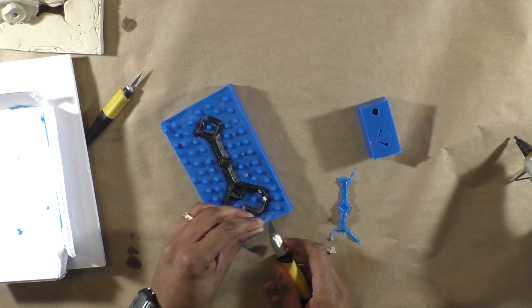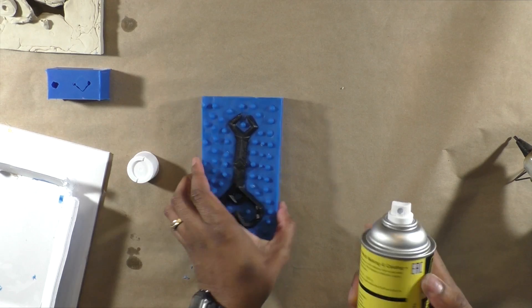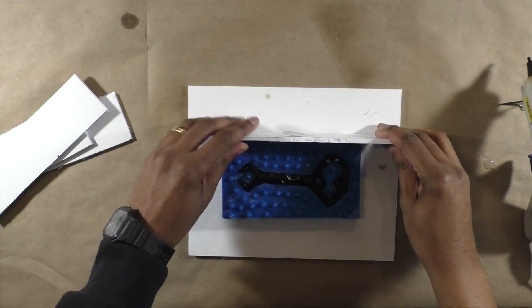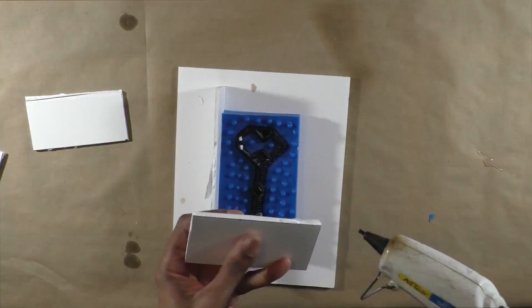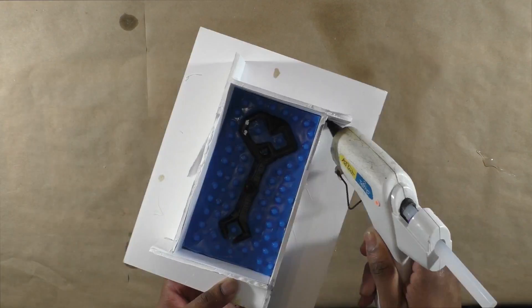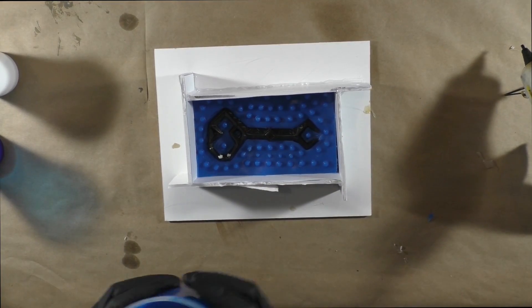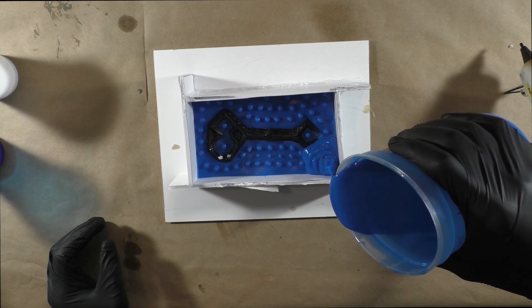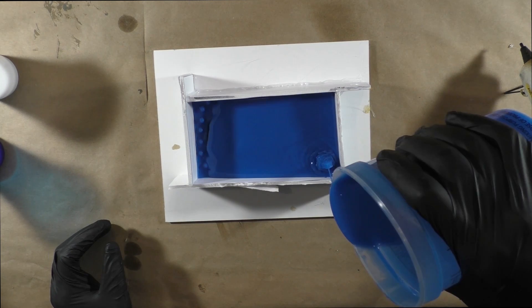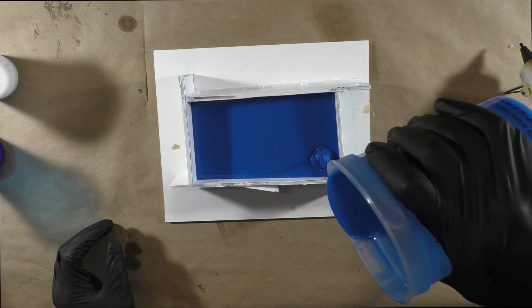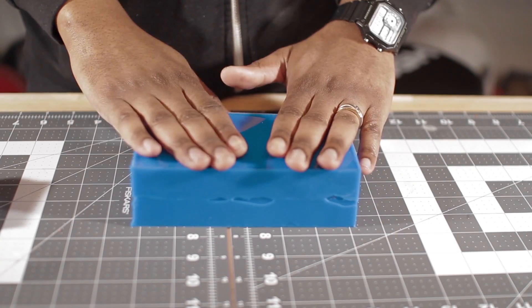After removing the clay and giving the mold a quick trim of the excess silicone, I sprayed a bit of mold release and repeated the process of building the box and pouring the silicone for the second part of the mold. I again allowed this to cure overnight and here is the two-part mold all ready for resin casting.